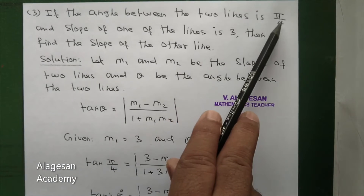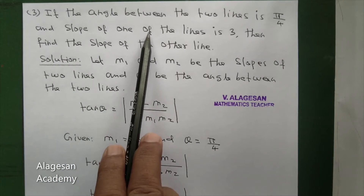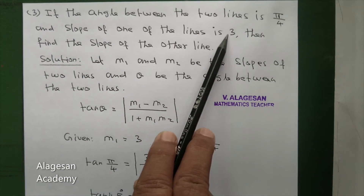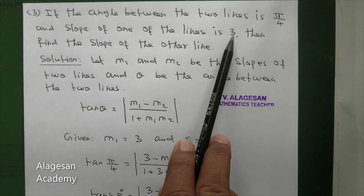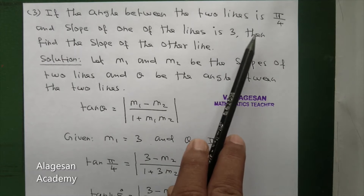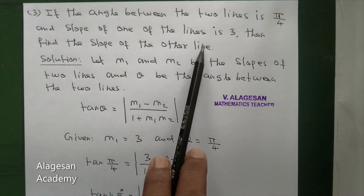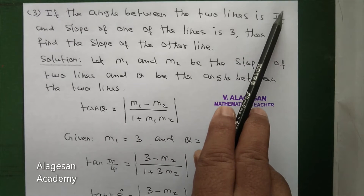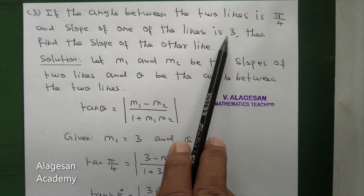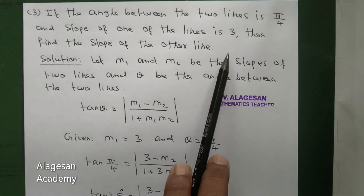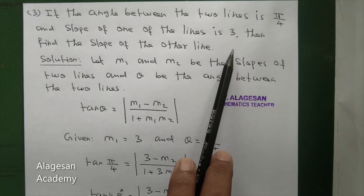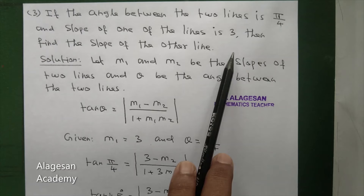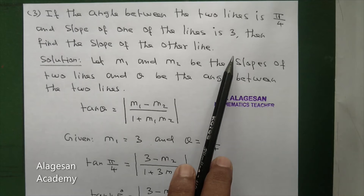The slope of one of the lines is 3. We denote the slope of one line as M1. We have to find the slope of the other line, that is M2.